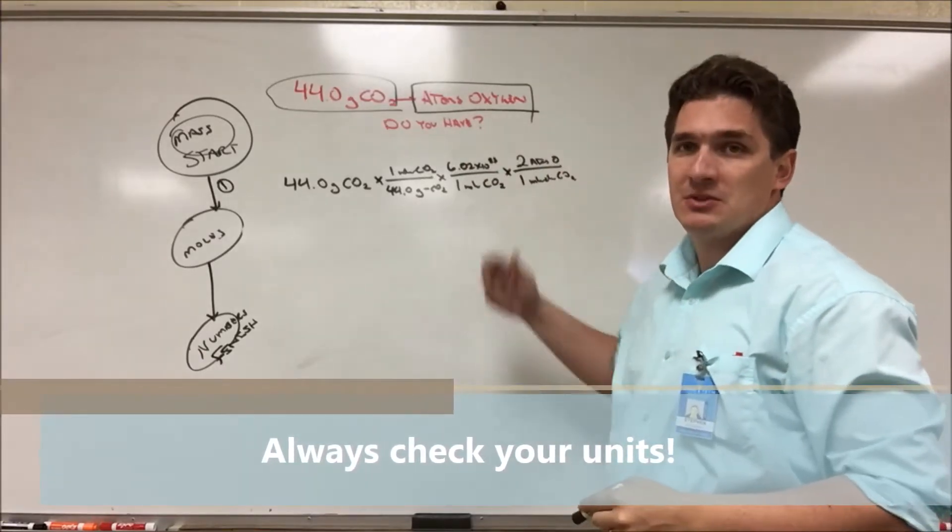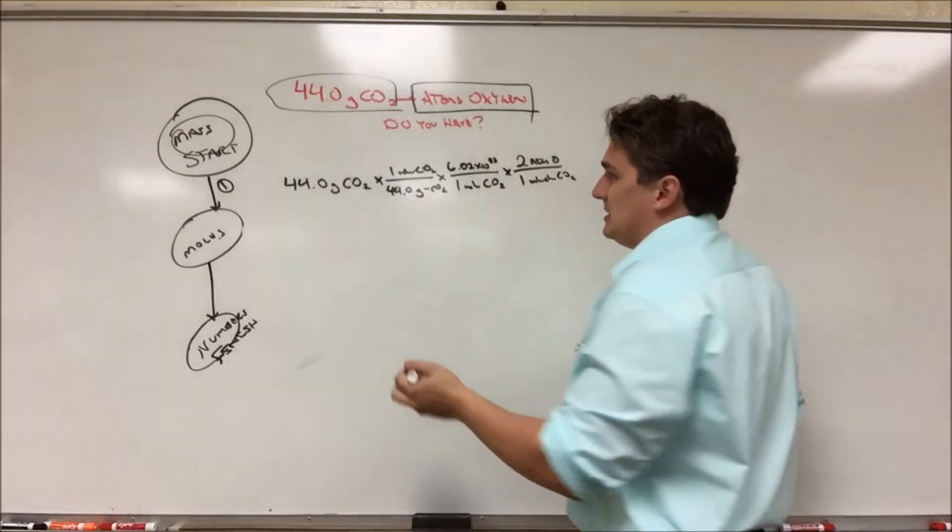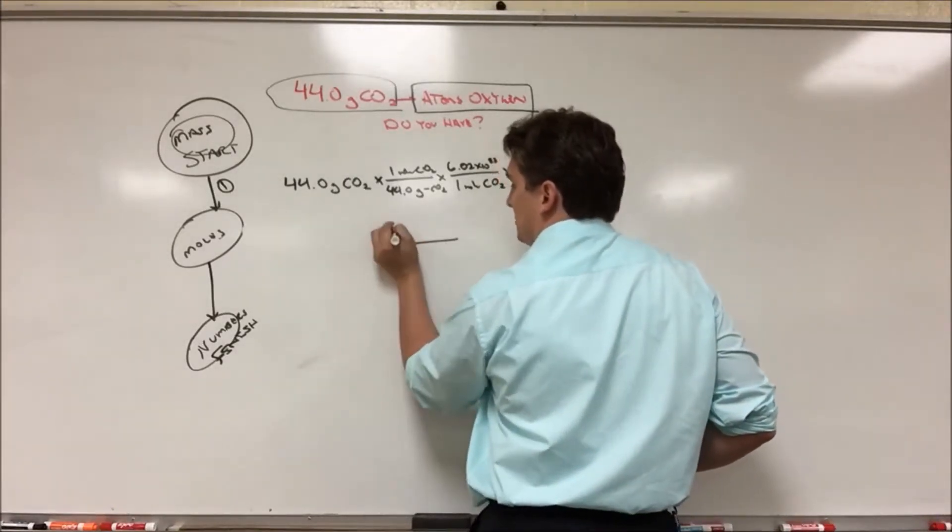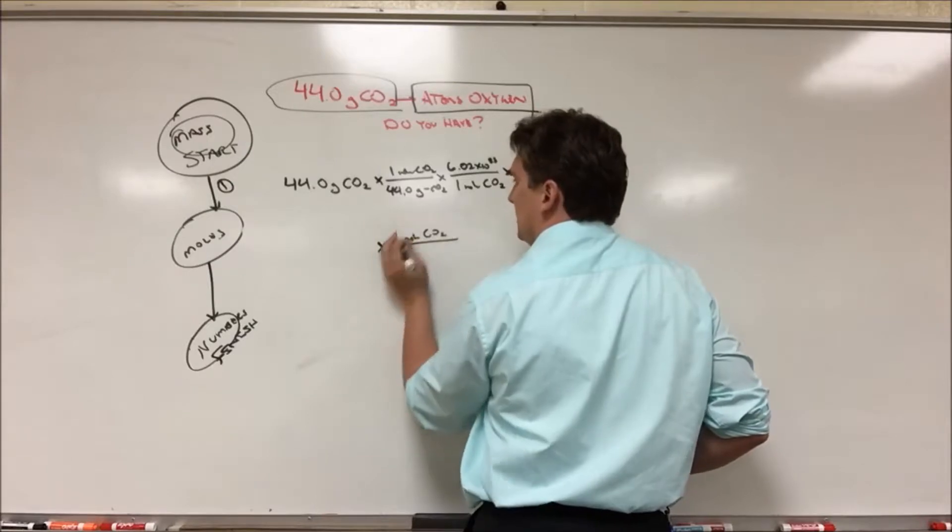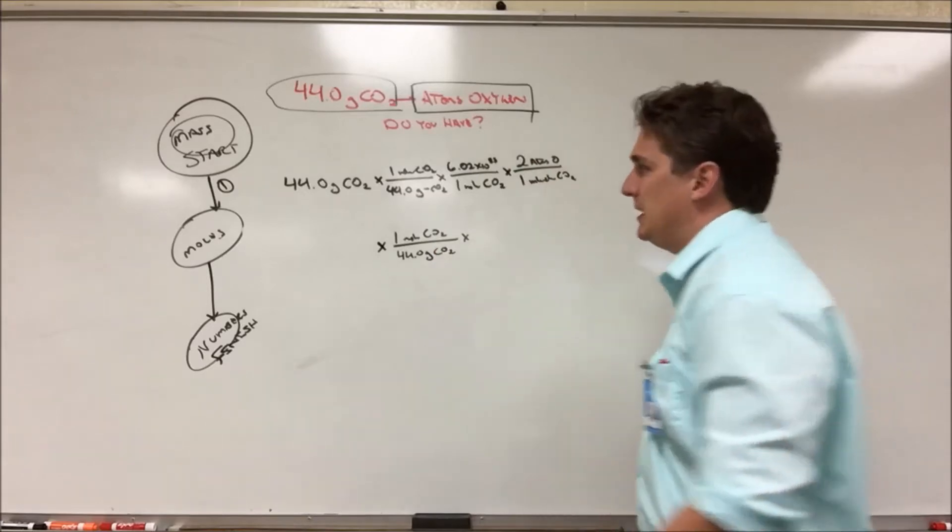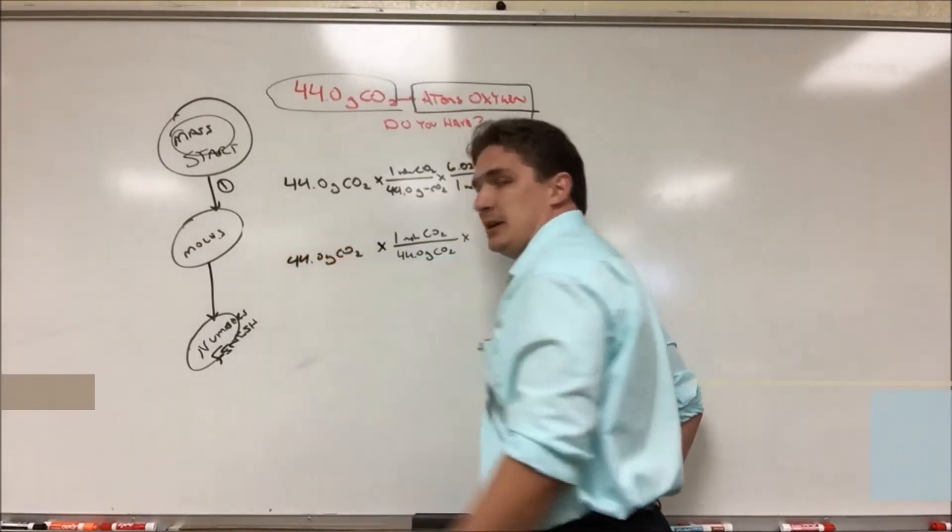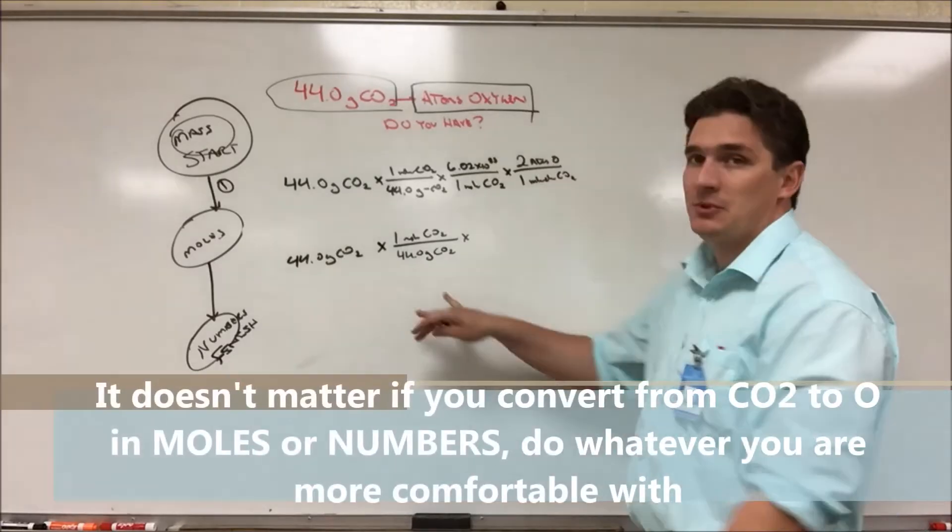Now let's say you want to flip these two steps. Let's say you didn't want to wait until you got to atoms to go to oxygen, you want to do it here. Setup is still the same for the first conversion factor. One mole of CO2 for 44.0 grams of CO2. That's fine, nothing's changed, so we got 44.0 grams of CO2, we can't go anywhere else. We have to go to moles first.